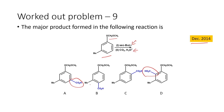In one case the substituent is ortho to the methyl group, in another it is ortho to the ether, and in the last one it is in between both the ether unit and the methyl. So we have four different products formed in this reaction, and we have to find out what is the product that will be formed in this particular case.